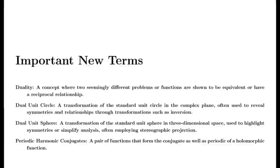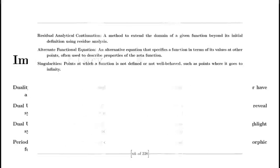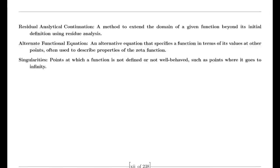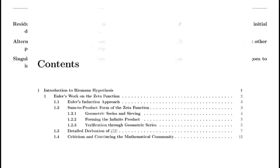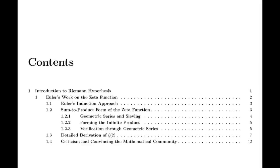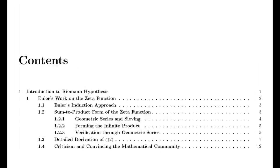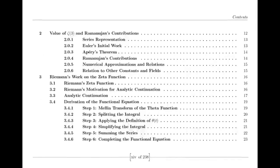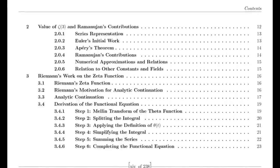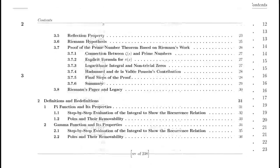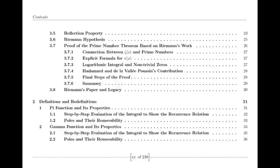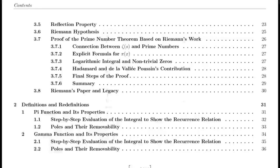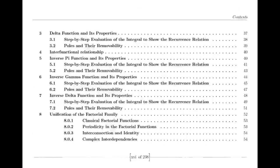Moving to the 19th century, we encounter Bernhard Riemann, who expanded our understanding of complex functions. Riemann introduced the concept of analytic continuation, which allowed for the extension of functions beyond their initial domains. He extended the Riemann zeta function — initially defined only for complex numbers with real parts greater than 1 — to the entire complex plane except for s = 1, where it has a simple pole. This was a crucial advancement in complex analysis.